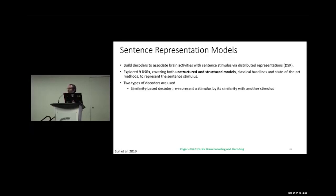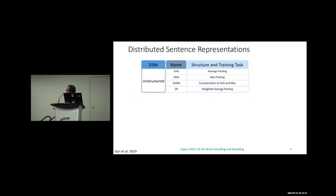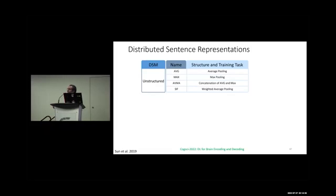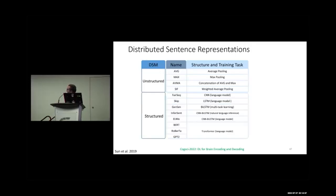They followed nine distributed sentence representation models categorized as unstructured and structured. Two types of decoders were used: a similarity-based decoder and a regression-based decoder. Among the nine models, unstructured ones include average pooling, max pooling, and their concatenation, while structured ones include skip-thought vectors, InferSent, and BERT/GPT-2/XLNet.